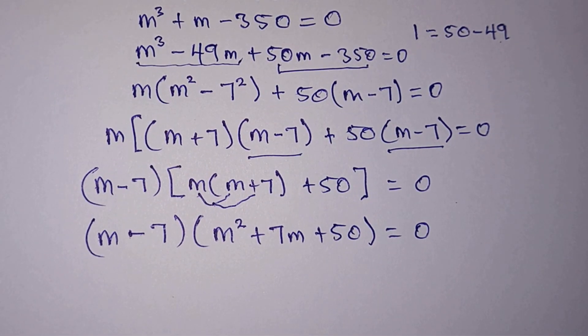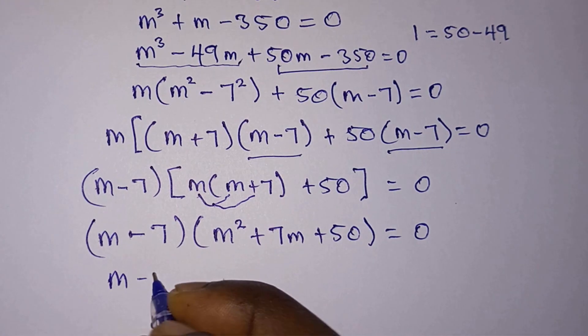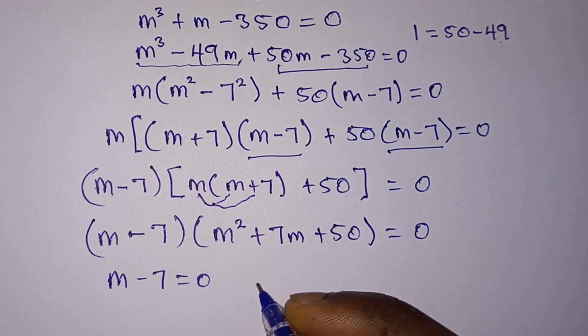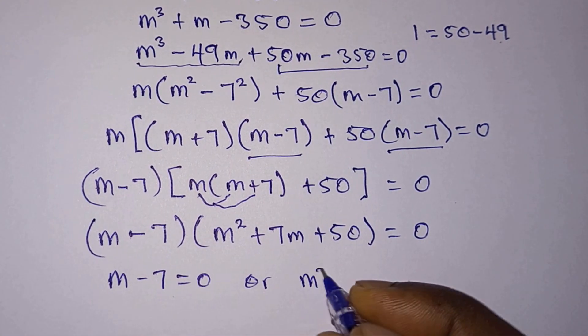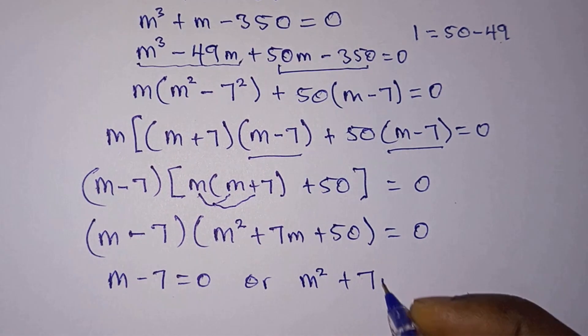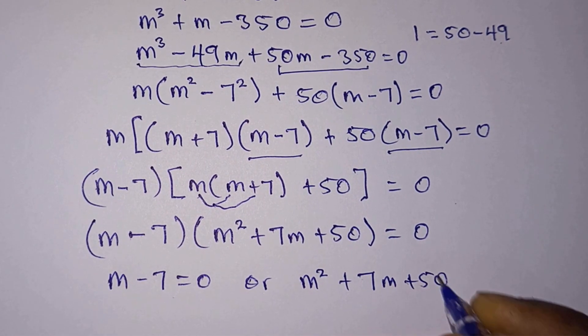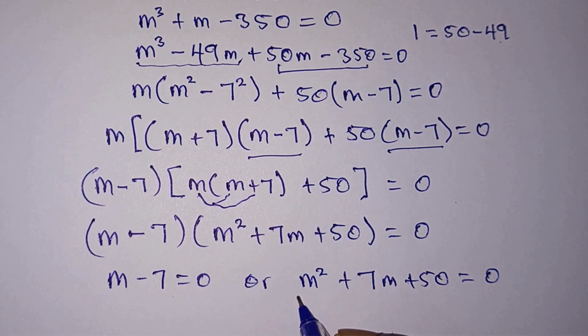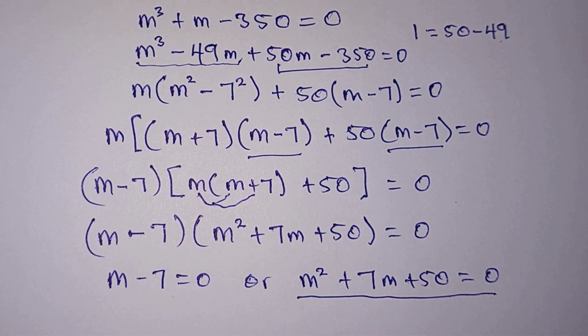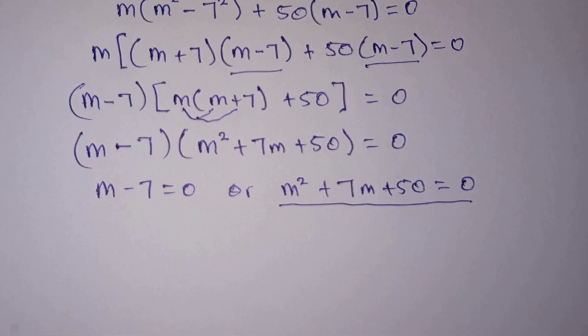We have a product of two factors, so we can say that m minus 7 is equal to 0, or m squared plus 7m plus 50 is equal to 0. And let's consider this quadratic equation first.